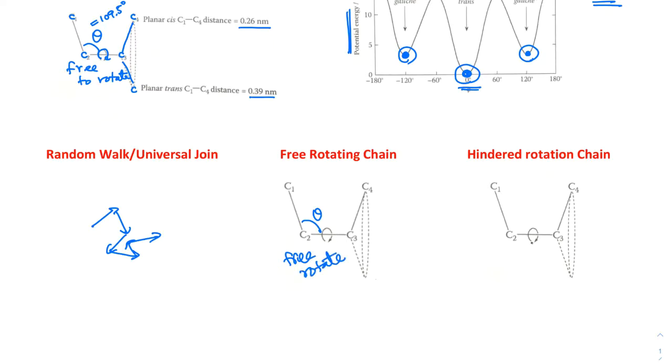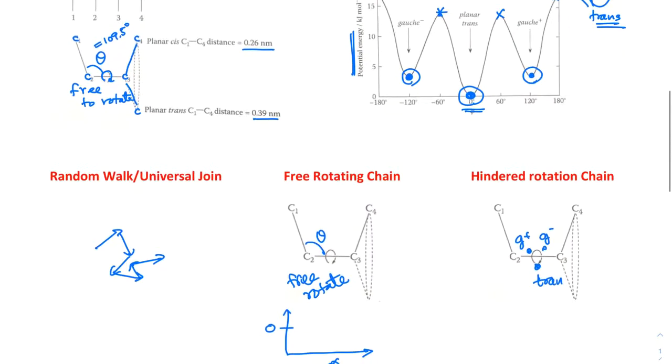And then this one is essentially, they prefer those three data, three points, where you have a trans, gauche plus and gauche minus. And then there are other probabilities. So in terms of the potential, the rotation angle. So this is an angle. And then this is a zero. There's no preferences. Right? So it is flat throughout any angles. From zero to minus 180 to 180.